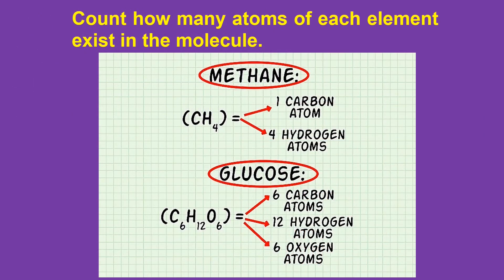In calculating the molar mass, first list each element present in the molecule. Then, count the atoms according to the molecular formula and write them next to the element's name or symbol. For methane (CH4), list carbon and hydrogen — methane comprises 1 atom of carbon and 4 atoms of hydrogen. For glucose (C6H12O6), list carbon, hydrogen, and oxygen — glucose comprises 6 atoms of carbon, 12 atoms of hydrogen, and 6 atoms of oxygen.